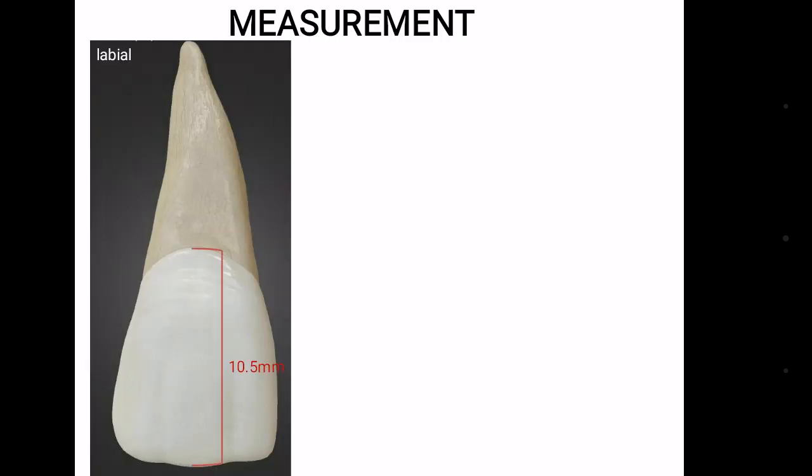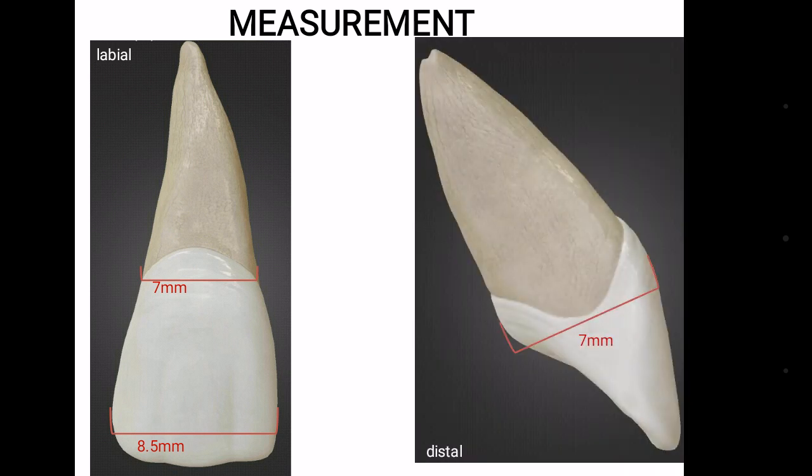The crown is 10.5 mm, the root is 13 mm, mesiodistal diameter is 8.5 mm and at cervix it is 7 mm. Labiolingual diameter is 7 mm.